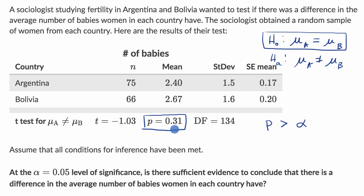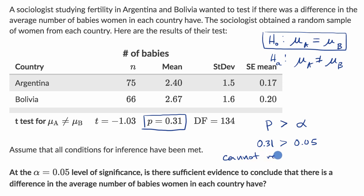We can see it right here: 0.31 is for sure greater than 0.05. So in this situation, we cannot reject the null hypothesis. Therefore, there is not sufficient evidence to conclude that there is a difference in the average number of babies women in each country have.